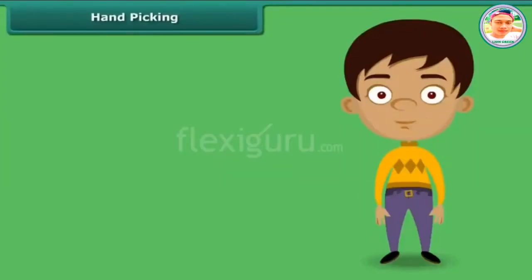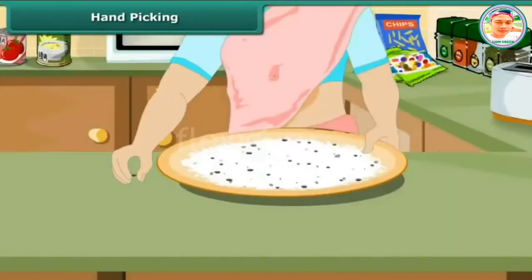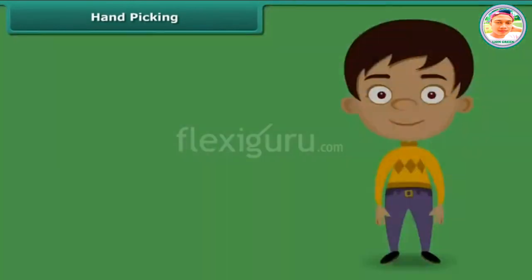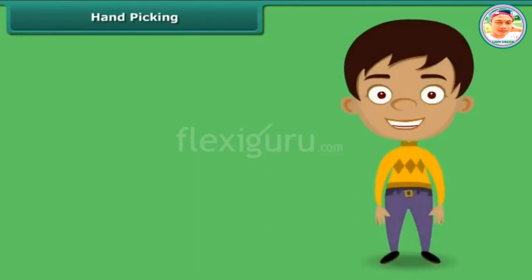How does your mother separate small pieces of stones and other impurities from wheat, rice and pulses? Yes, simply by picking them up by hand, one by one. The method of hand picking can be used for separating impurities that are easily visible to the naked eye and are present in small quantity in the form of dirt, husk and stone.